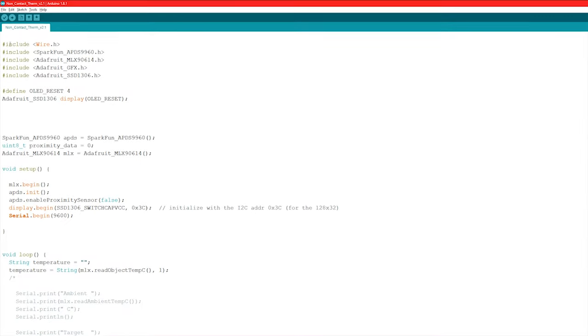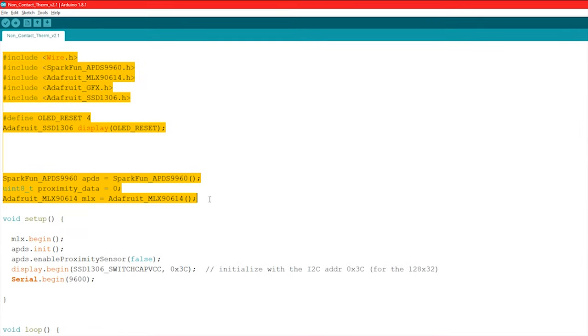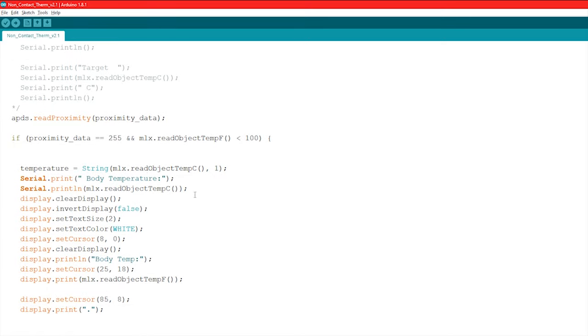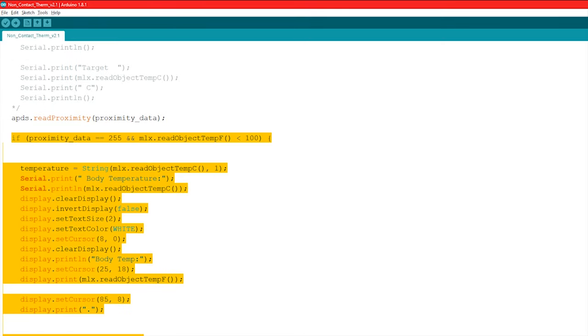The program that I have written is not that complicated. It comprises of all the required libraries of our main sensors and components, and the main program simply checks for the proximity value first before executing command that shows the temperature.